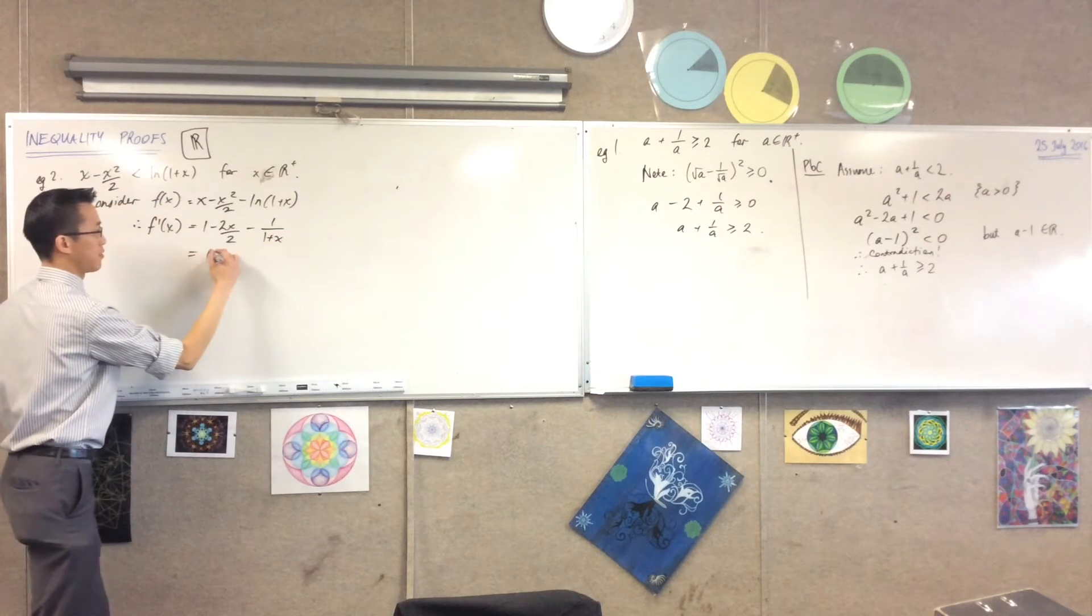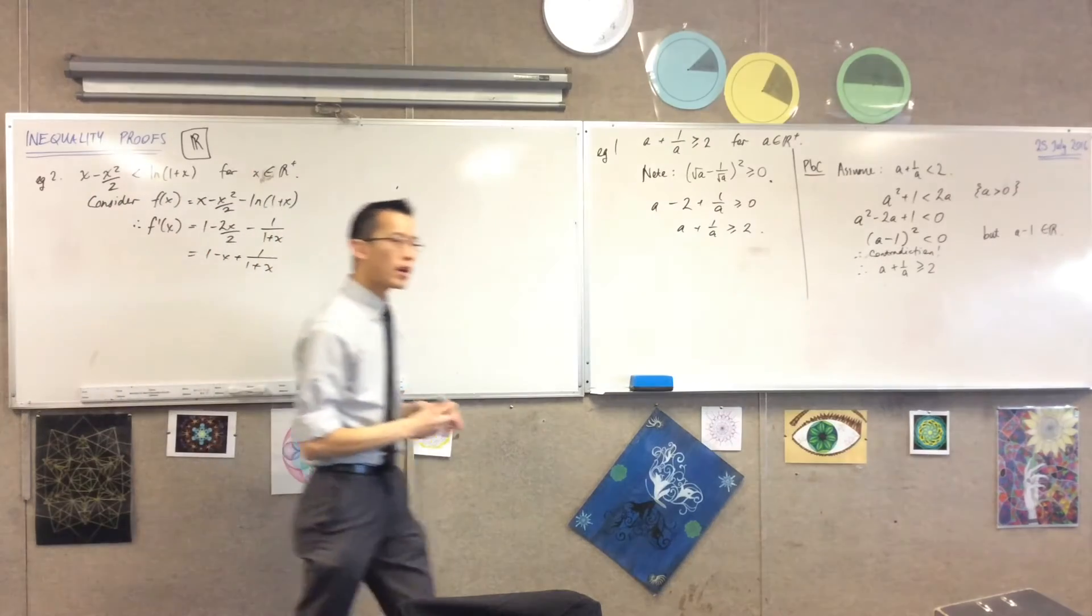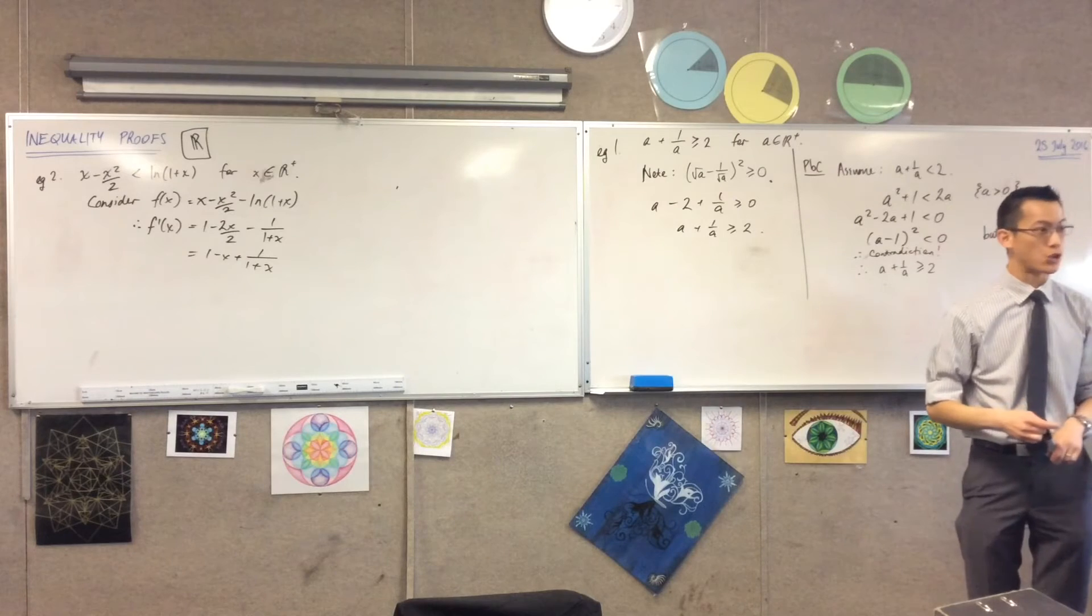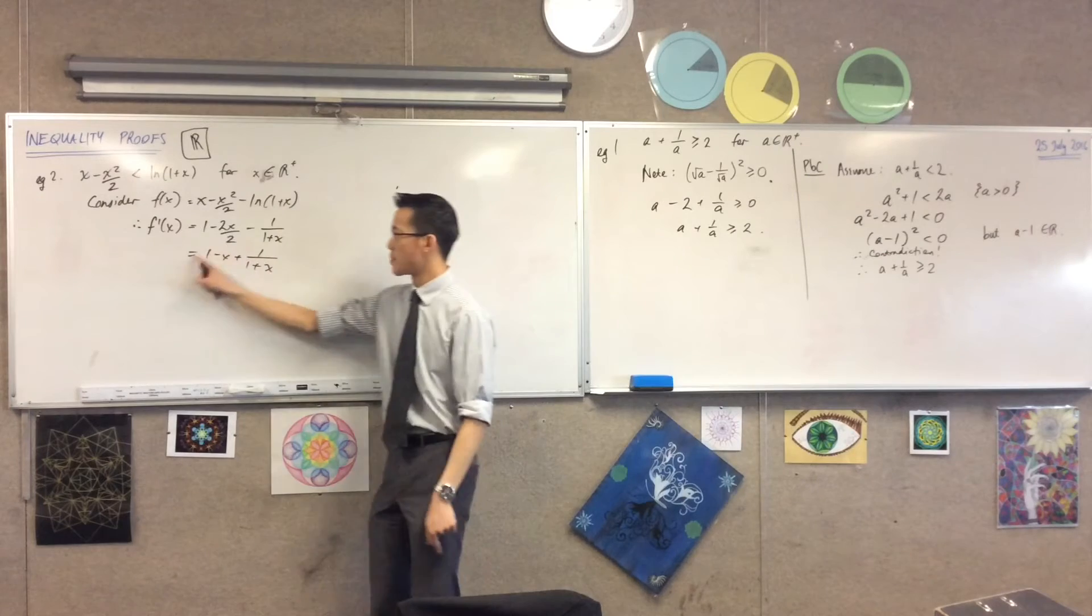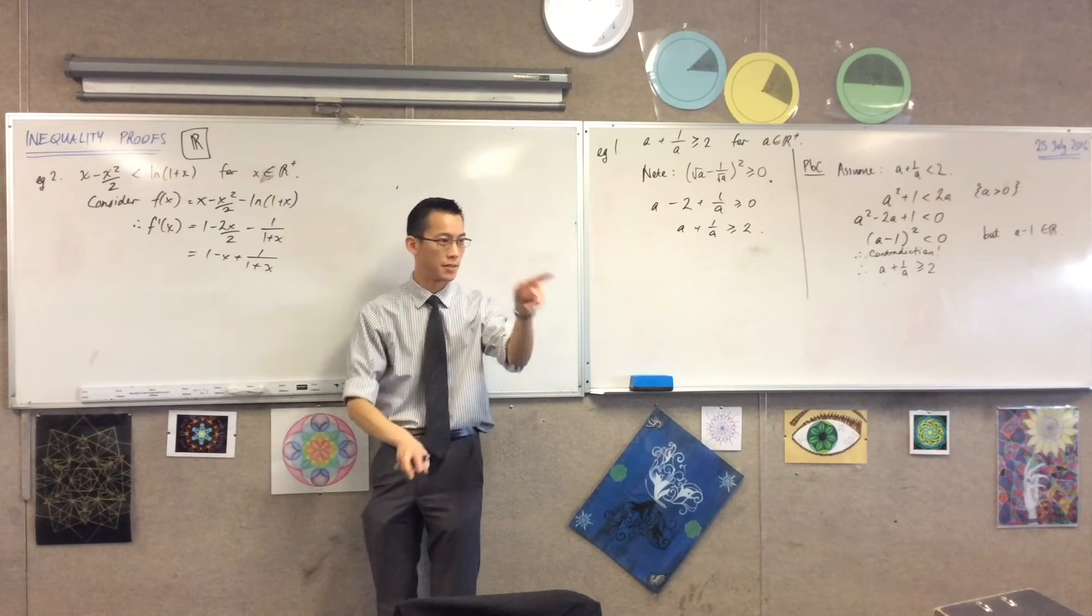Good, I'll just simplify this a little bit. Now if what I want to do is show that this thing is going to be a decreasing function going down from some point, then I need to be able to say something about this as a whole. But it's all kind of in separate bits at the moment.